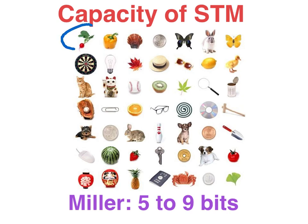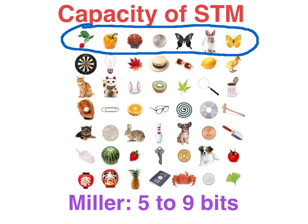So if we were viewing images presented individually in say two-second intervals, we'd be able to hold on to the first seven items or so. Then when we got to about the eighth item — say a dartboard — STM would literally filter out memory of the cherry, and when we got to the ninth item we'd lose the first one on the list, the capsicum, and so on.